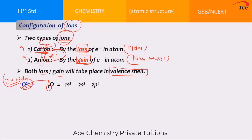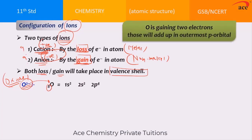For O²⁻, it is an anion, so oxygen should gain electrons. Oxygen is gaining 2 electrons because of the 2 negative charge — 2 negative charge means 2 electrons. Those will add up to the outermost p orbitals. Can 1s receive the electron? No, because it is fully filled. Can 2s receive the electron? No, because it is also fully filled.